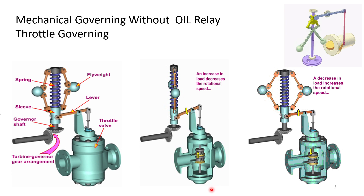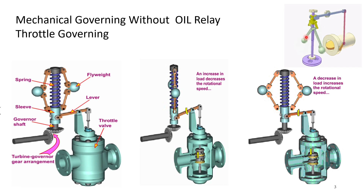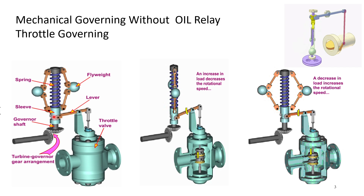In this slide we are going to discuss the mechanical governing of the steam turbine without a relay. On the left hand side, this shaft is connected to the turbine shaft. When turbine shaft speed is increasing, this fly ball moves up and then it starts closing the valve. When turbine speed goes down, this valve will close. This is the actual arrangement.